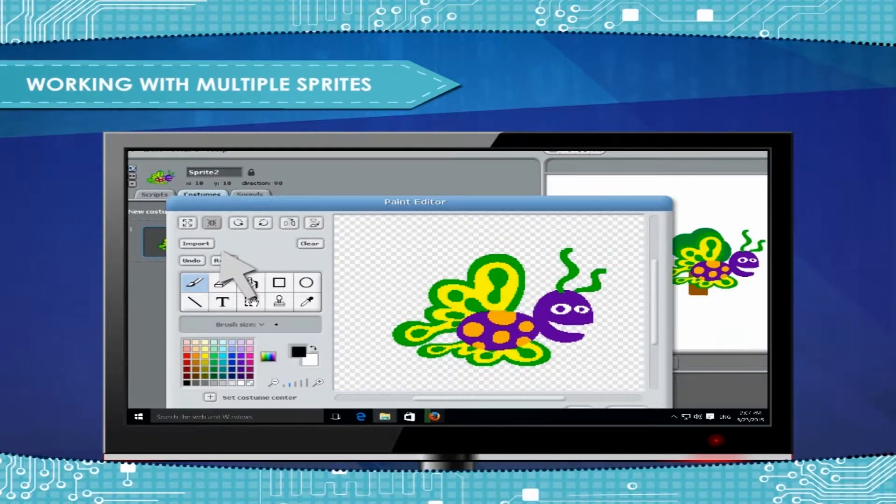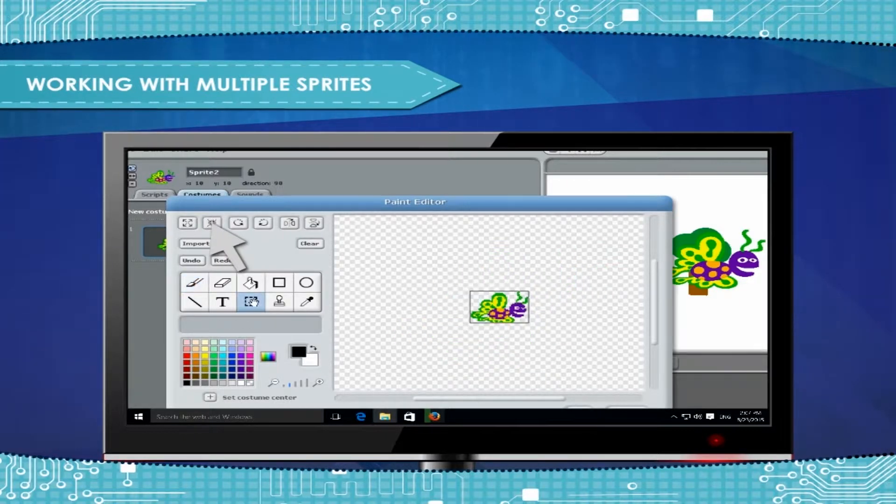Using the Select tool, first select the image on the sprite. Then use the Shrink tool to get the size you want. Finally, click on OK button.